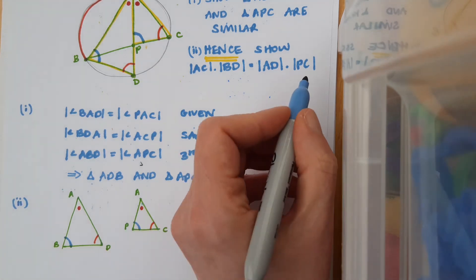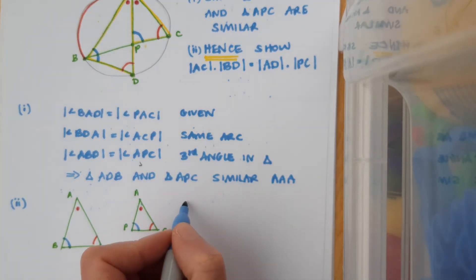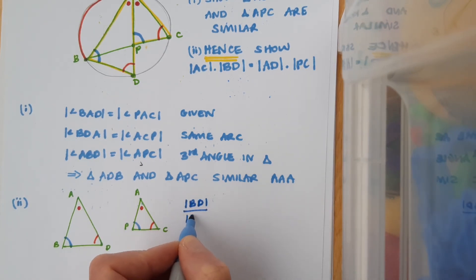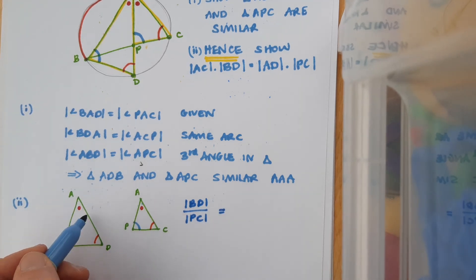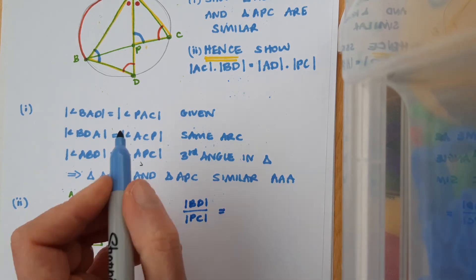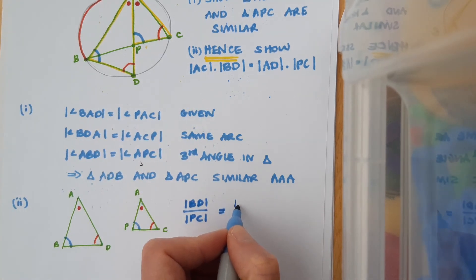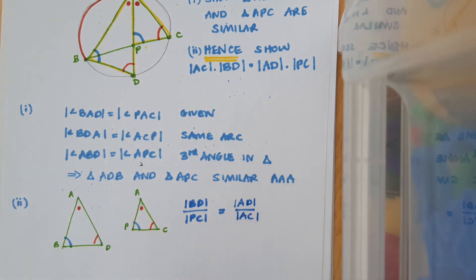That looks promising because PC is also mentioned up here. So BD over PC equals AD. Yeah, AD is mentioned up there. Over AC. Yeah, that looks good. So AD over AC.